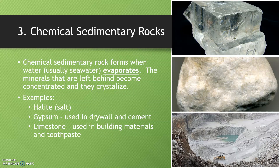The third type of sedimentary rocks is chemical. Chemical sedimentary rocks form when water — usually sea water — evaporates. The minerals that are left behind become concentrated and crystallize. Examples include halite, which you learned about in your minerals lesson; gypsum, which is used to make drywall and cement; and limestone, which is used in building materials and toothpaste. All three were formed when ocean water evaporated and the minerals crystallized together.